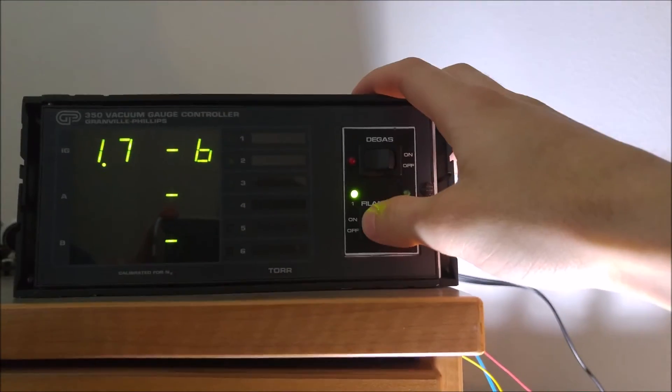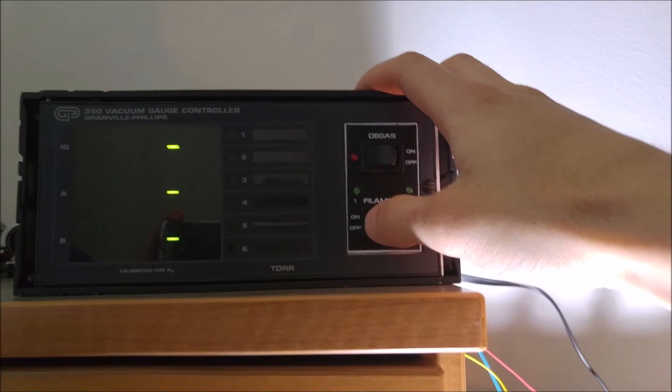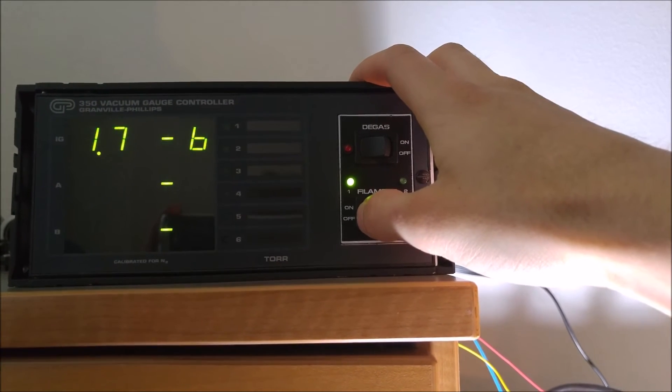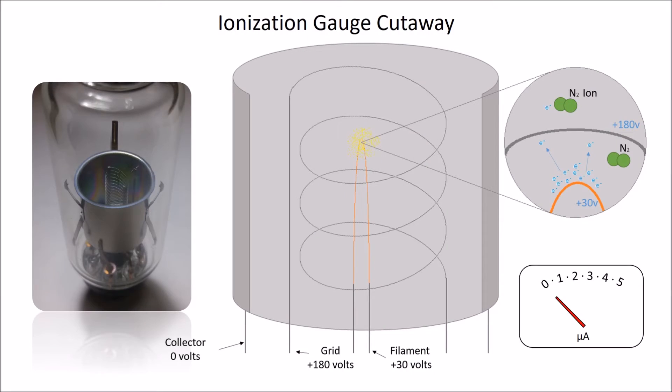The gauges cannot work at atmospheric pressures because the oxygen in the atmosphere would burn out the filament. The pressures you see here are only relative because I've not calibrated the gauge yet. An ion gauge works by counting gas particles in a vacuum. The less particles, the better the vacuum.